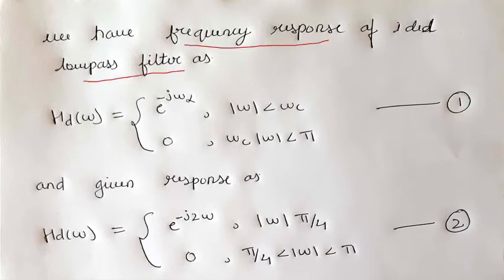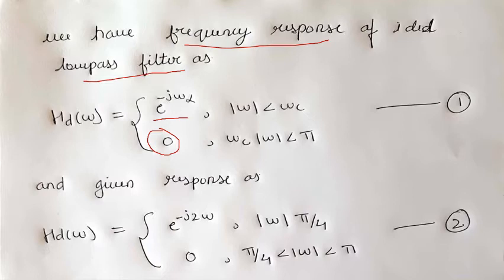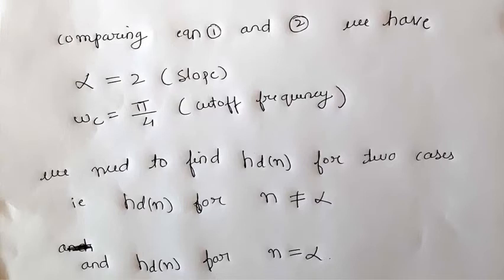We have the frequency response of an ideal low-pass filter defined as hd of omega equals e raise to minus j omega into alpha for omega less than omega c, and 0 for magnitude of omega between omega c to pi. We compare this standard equation with the given equation: hd of omega equals e raise to minus j 2 omega for modulus of omega less than pi by 4, and 0 otherwise. By comparing, we get alpha equals 2 and omega c equals pi by 4.